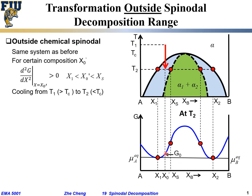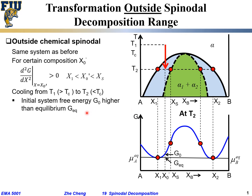When we quench to T2, g₀ is the initial Gibbs free energy — we have a single-phase alpha structure falling on this Gibbs free energy curve. g_eq is on the common tangent line, that's our final equilibrium Gibbs free energy. There is a small driving force from g₀ to g_eq — a tiny decrease — which is still energetically favorable. g₀ is still higher than equilibrium energy.